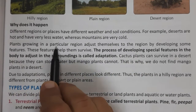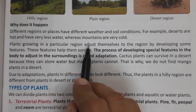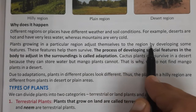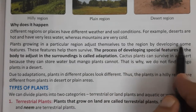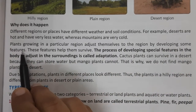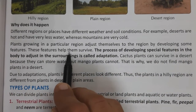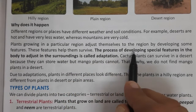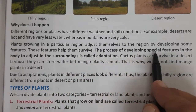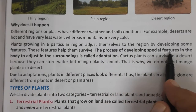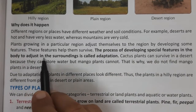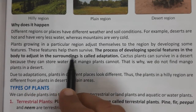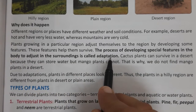Plants growing in a particular region adjust themselves to that region by developing some special features. These features help them survive. The process of developing special features in the body to adjust to the surroundings is called adaptation.